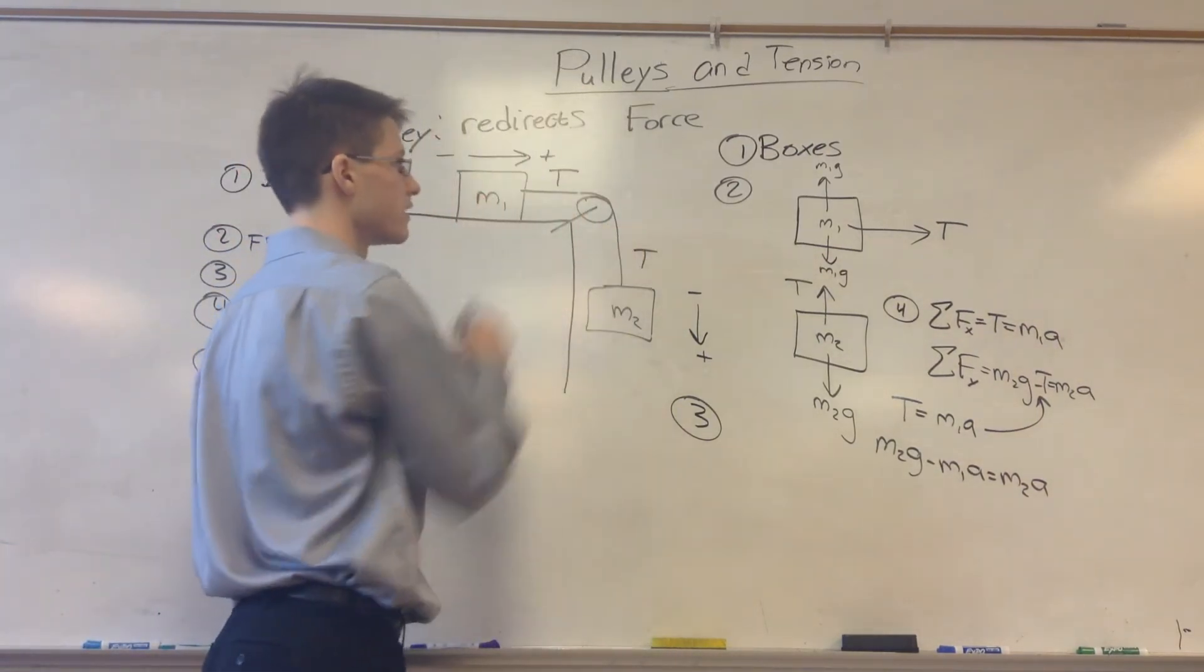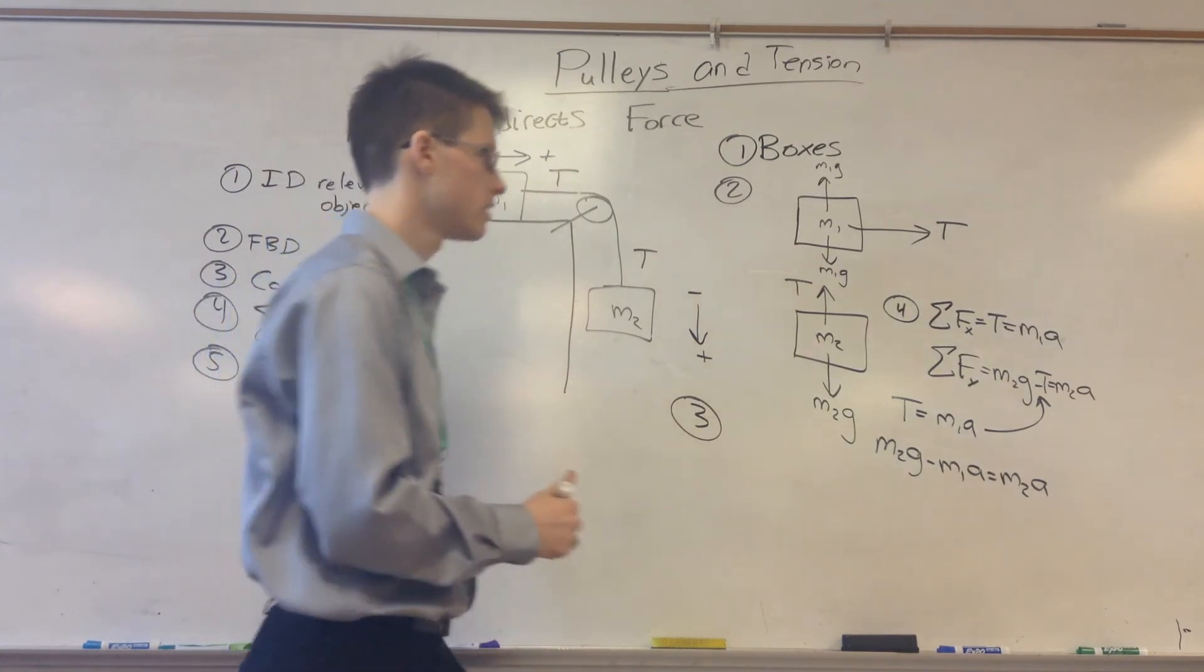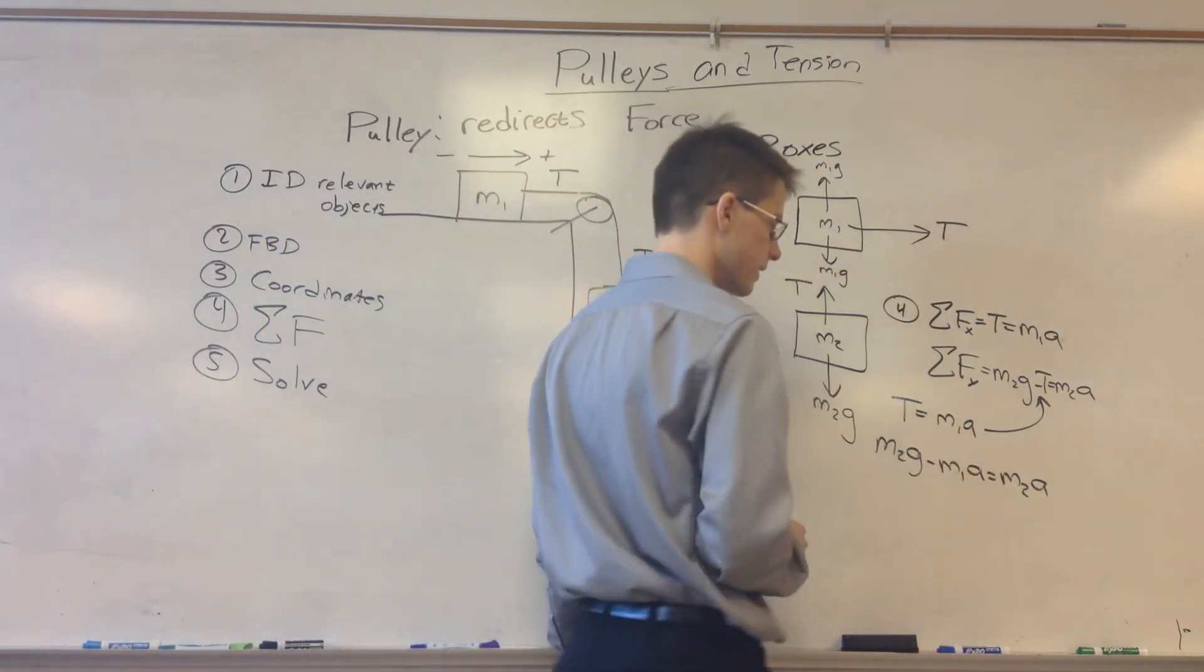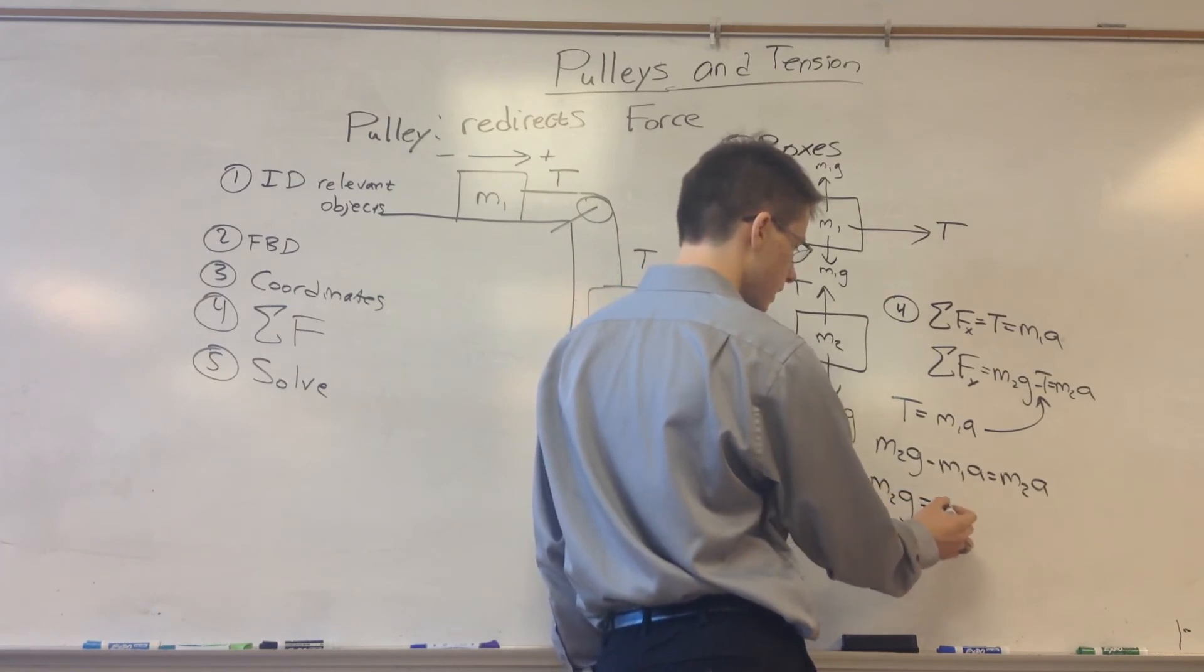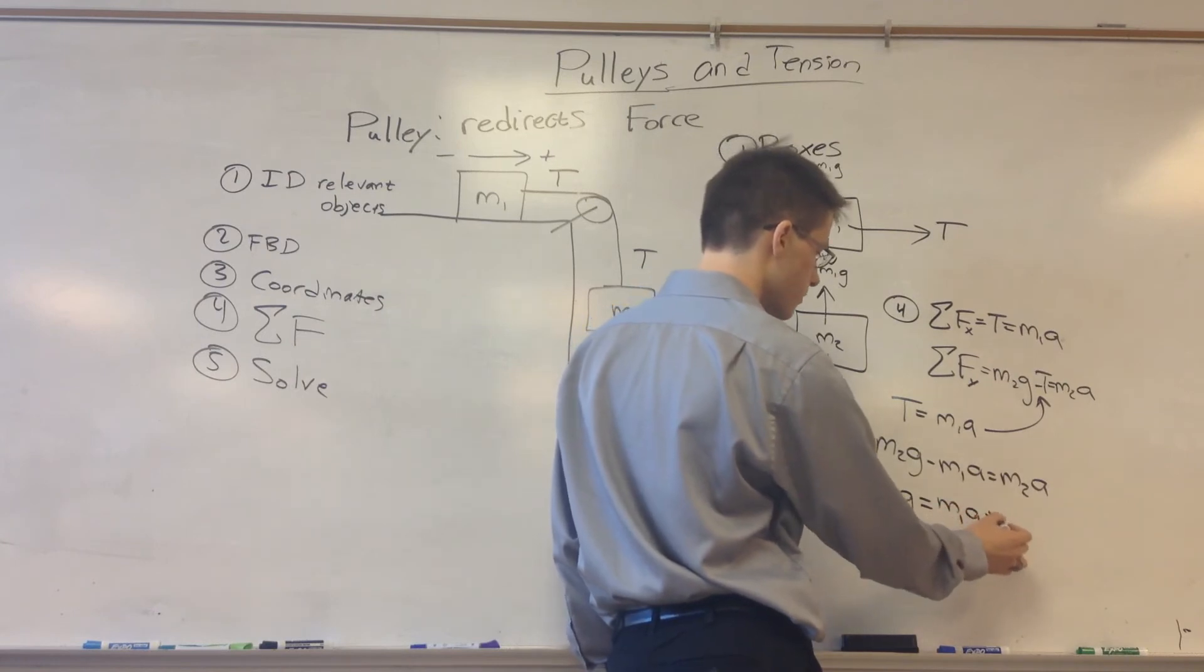Now we can solve for a. So we have m2g is equal to m1a plus m2a. And we can pull out the a. So this gives us m2g equals a times m1 plus m2.